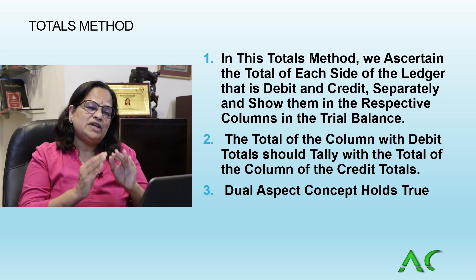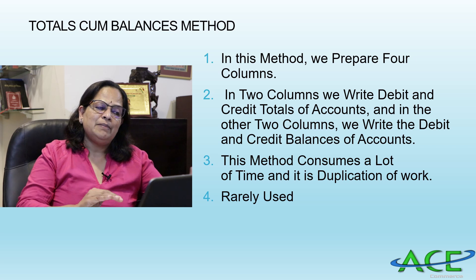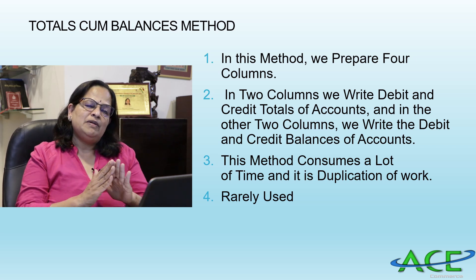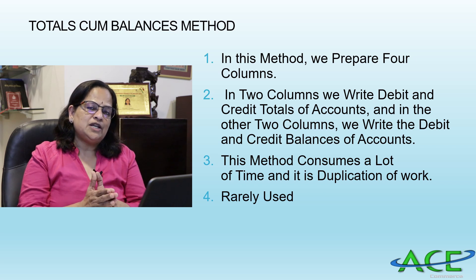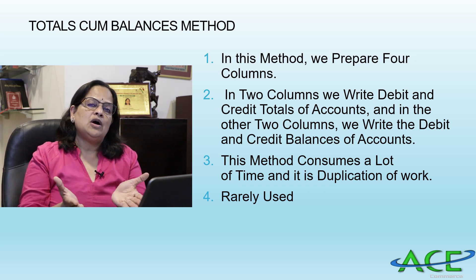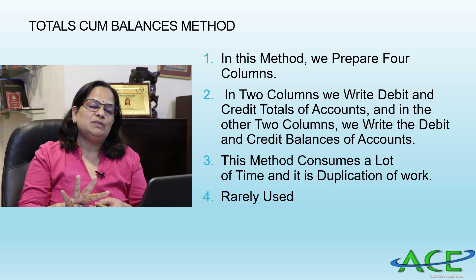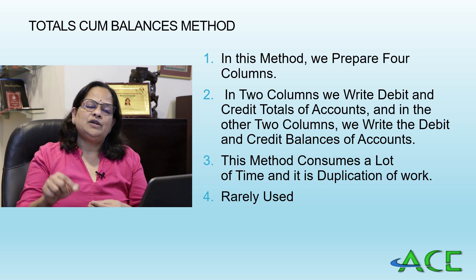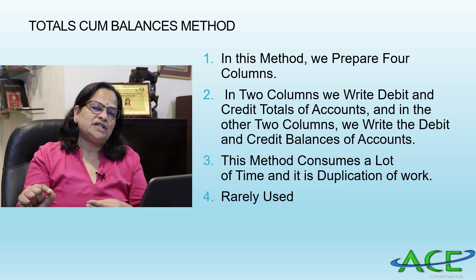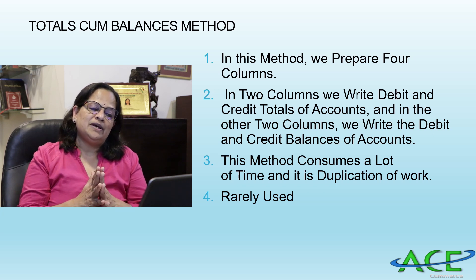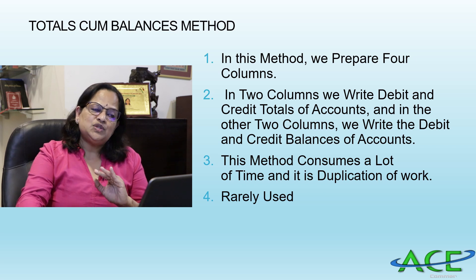In the totals method we are not balancing the account; we take the total of both sides to the trial balance. In the totals-cum-balances method, four columns are provided: total of debit side, total of credit side, debit balance, and credit balance. This method is not popular, consumes a lot of time, and is rarely used.